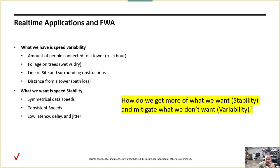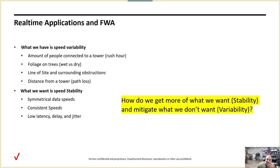Wet versus dry foliage, line of sight, and surrounding obstructions matter. Even if you have line of sight and think you have the best RF conditions, somebody could build a building across the street. Distance from a tower — you can't move your business, and you can't tell Verizon to build a tower next to it. These are things we have to contend with, hence the asterisks on SLAs and speeds we see in FWA.